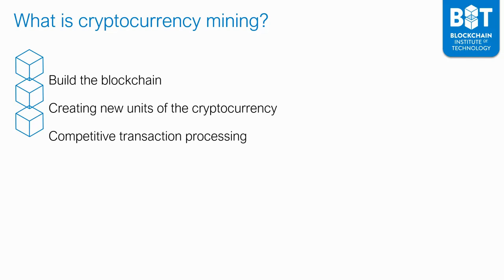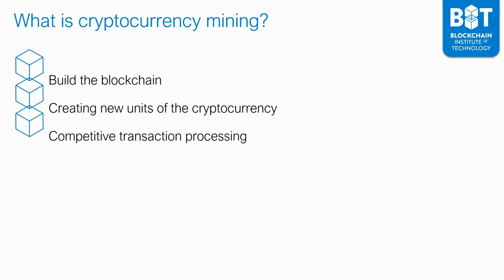Cryptocurrency mining has often been called competitive transaction processing. As a miner, you are involved in a race against other miners all around the world, because there can only be one winner per block. Every time a new block is created and added to the Bitcoin blockchain — which happens approximately every 10 minutes — the miner or group of miners who make that block win the reward of 12.5 Bitcoins. That winner could be an individual miner, which is very rare, or a mining pool: a group of people who combine their computing power and share the winnings based on contribution.